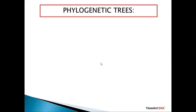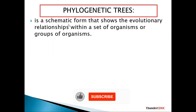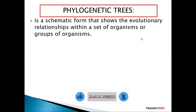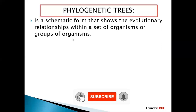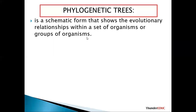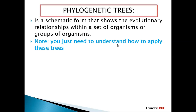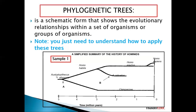A phylogenetic tree is a schematic form that shows the evolutionary relationship within a set of organisms or groups of organisms. It shows where organisms came from up to where they are now. You just need to understand how to apply the phylogenetic tree — you don't need to memorize what is on it, just how it operates.